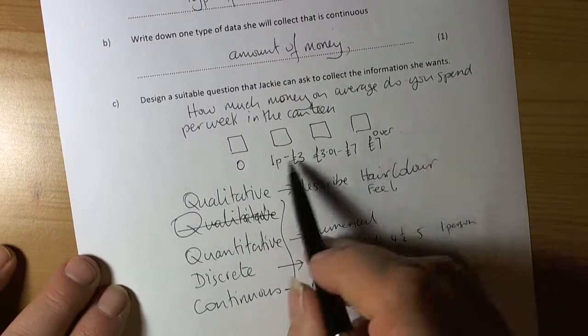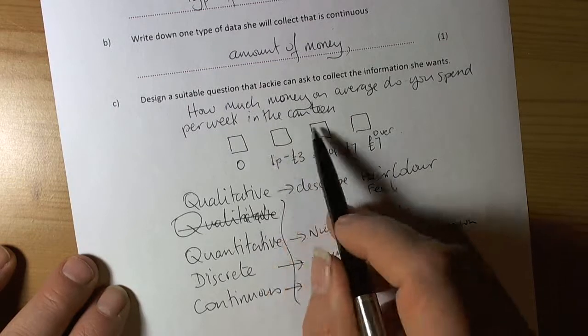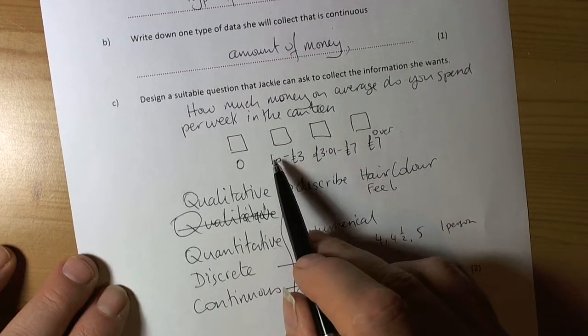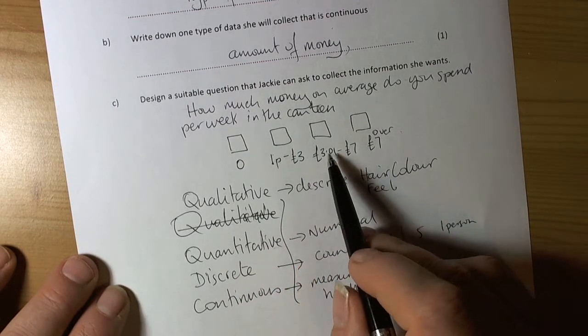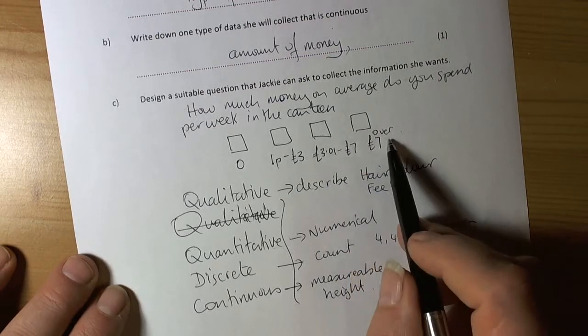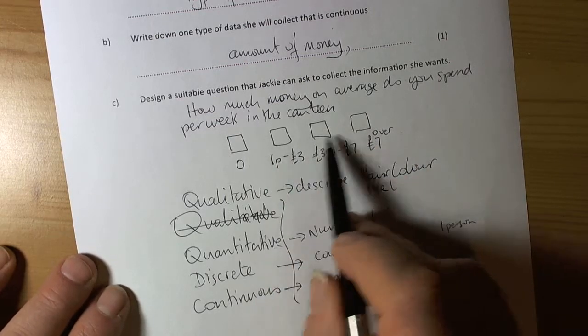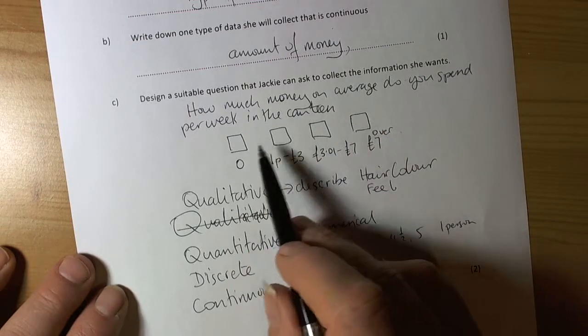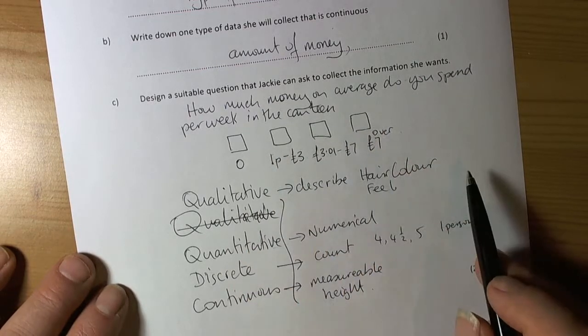That allows everybody to tick one box only. They'll spend nothing, or between a penny and £3, between £3.01 and £7, or over £7. That's all you'd need for that answer, just so somebody could tick one box only.